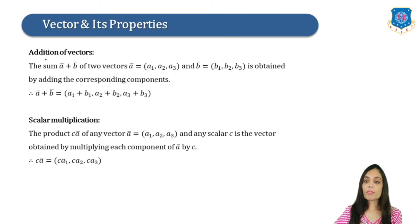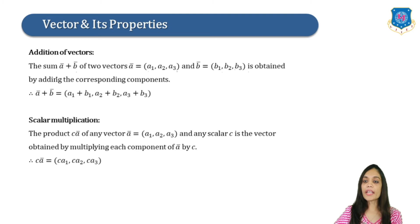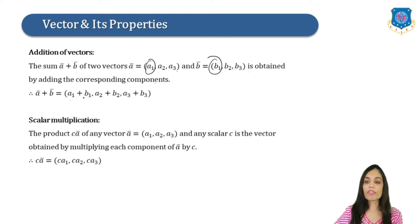Now let us study how to add two vectors. The sum of A bar + B bar, where A bar = (A1, A2, A3) and B bar = (B1, B2, B3), is obtained by adding the corresponding components: A bar + B bar = (A1 + B1, A2 + B2, A3 + B3).